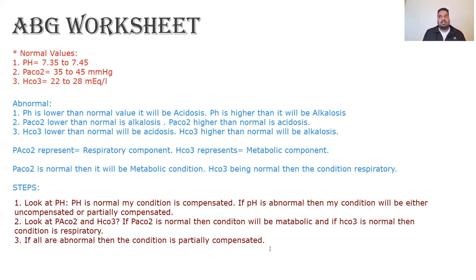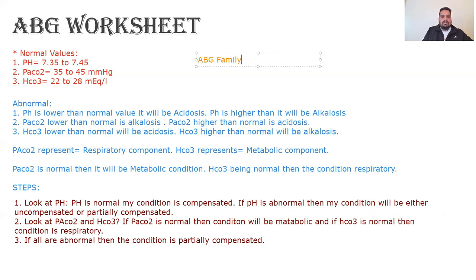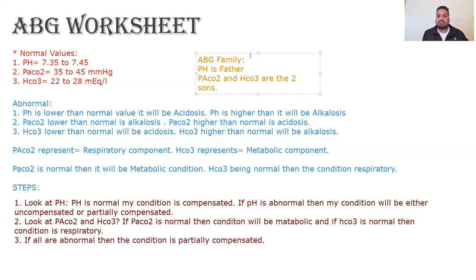Once these steps are clear, what happens when there is a partially compensated condition? I want you to remember this as an ABG family. In the ABG family — I'm going to use a different color to get the story out — pH is the father, and PaCO2 and HCO3 are the two siblings, let's say the two sons.